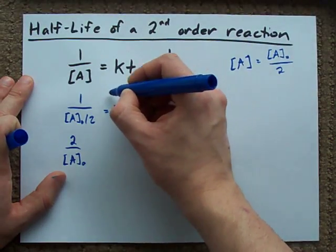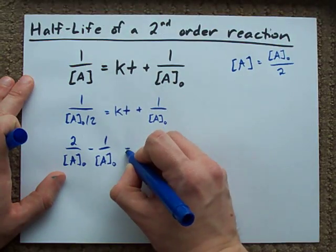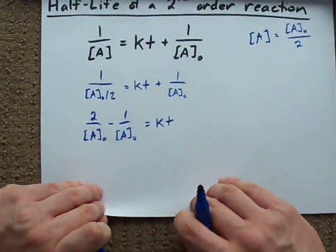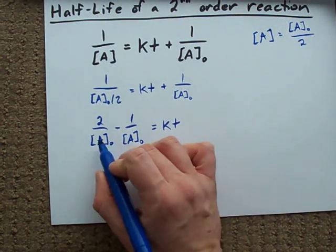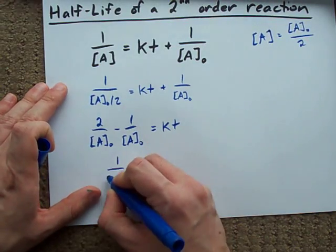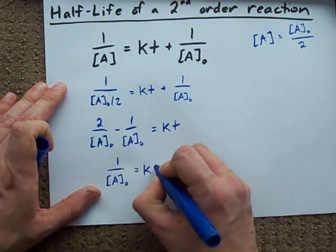I'm going to move this over, subtracting it instead. And I'm left with KT on the right-hand side. Now, common denominator already. 2 minus 1 makes 1 over the initial concentration. Left with KT.